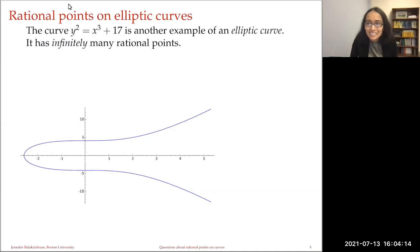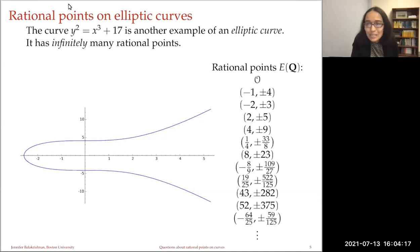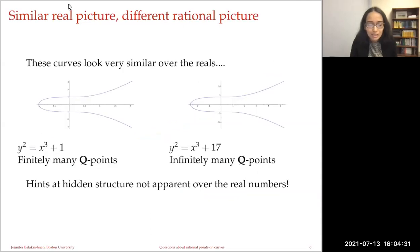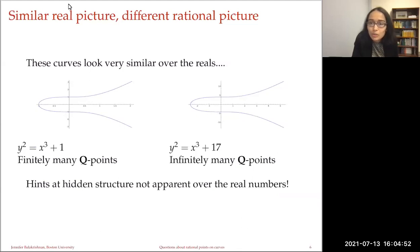There's quite a lot going on with elliptic curves, and there is rich structure that they have. The picture over the reals somehow didn't tell us so much about rational points — we just saw these two curves that look very similar over the real numbers when graphed in the real plane. Yet one curve had a finite number of rational points and the other had infinitely many rational points. This suggests that there is some hidden structure that we need to uncover that's not apparent over the real numbers when asking these questions about rational points.